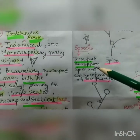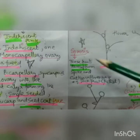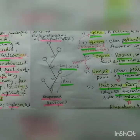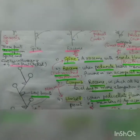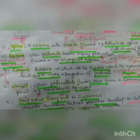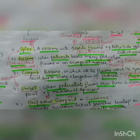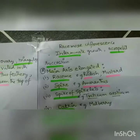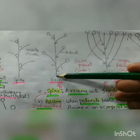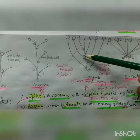The fruit formed from spike and catkin is a sorosis, which includes the jackfruit. Then we have corymb - in a corymb, it is a raceme in which all flowers reach the same level due to mere elongation of the pedicel. That is why it comes under the main axis elongated type. Here the main axis is elongated and the pedicel is of variable length.